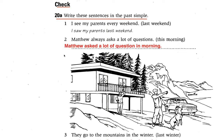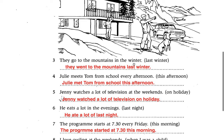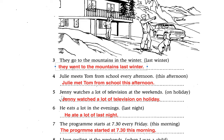Number three: they go to the mountain in the winter. The word I gave you is 'last winter,' so how can you change the sentence to past simple? You have to look for the verb. What is the verb of the sentence? Go. So how can I change 'go' to past simple? Go changes to 'went.' The answer is: they went to the mountain last winter. This is present simple changing to past simple — go to went.